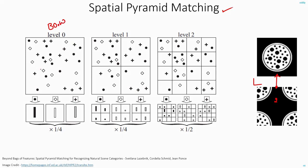In level 1, you divide the image into a 2x2 grid and calculate the histograms separately for each of these blocks. The same thing is shown here — you still have the same features: the circle, diamond, and plus sign. But you now calculate the histogram separately for each of the four quarters. The respective histograms for quarters 1, 2, 3, and 4 are shown here.